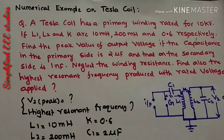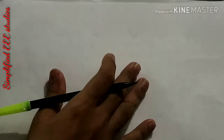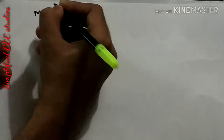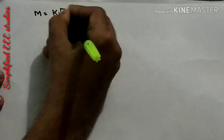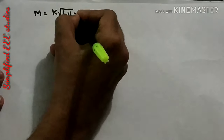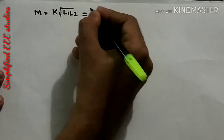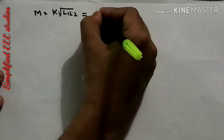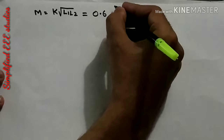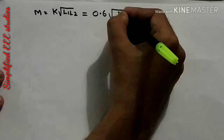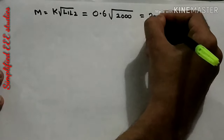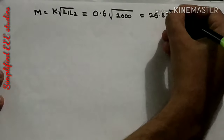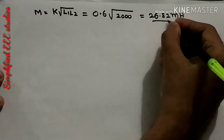First and foremost, you need to calculate the M value — mutual inductance. The formula is M = K × √(L1 × L2). Substituting: K is 0.6, and L1 × L2 gives 2000. The value is approximately 26.82 millihenry.